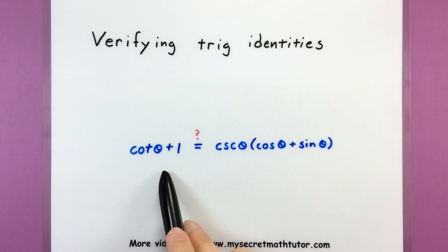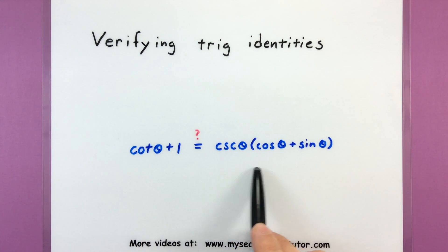So the idea behind this is that you have some sort of trigonometric expression and it's actually equal to some other trigonometric expression. Now the difficulty is really figuring out do these two things equal the same thing? Are they really equal?